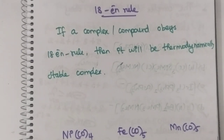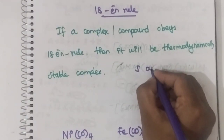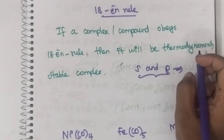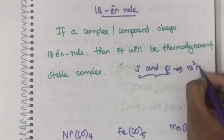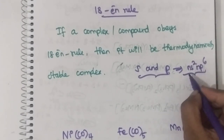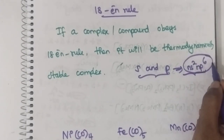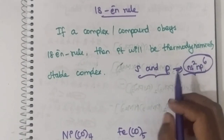Generally, if a complex or compound obeys the 18 electron rule, then that particular complex will be a stable complex. Why is it so? Because in main block elements, that is S and P block, whenever it obeys the octet rule — that is 8 electrons — it will be stable, because ns2, np6 is the configuration for noble gases. Whenever the configuration is like this, it will be stable because it is inert — noble gas configuration.